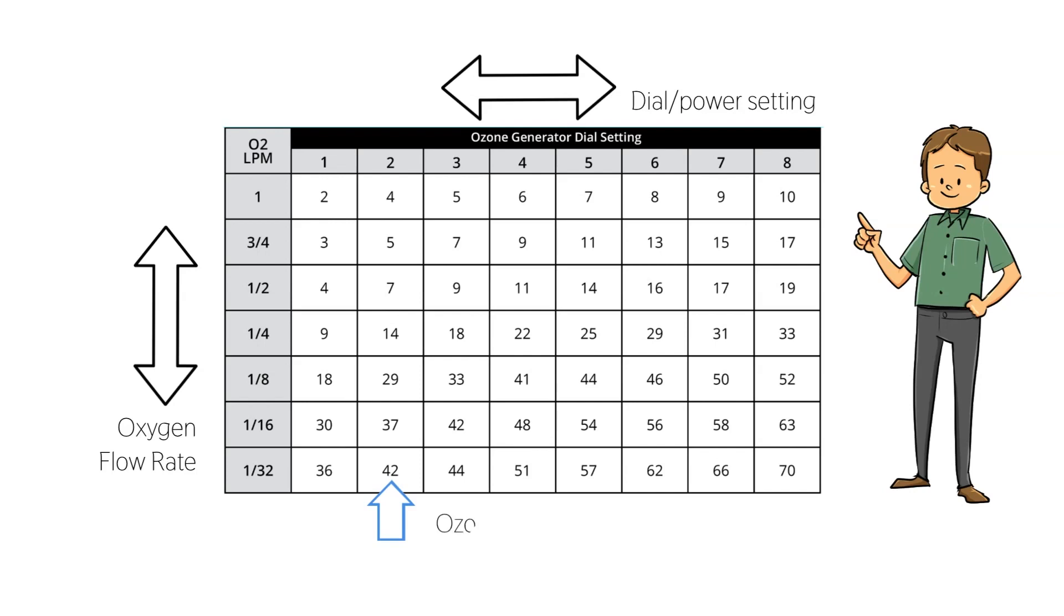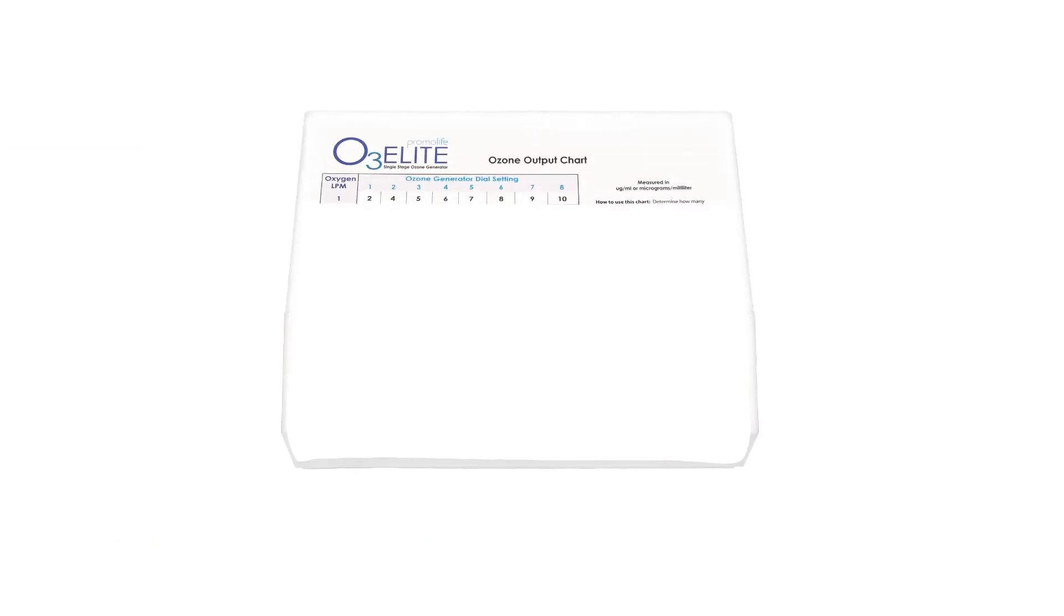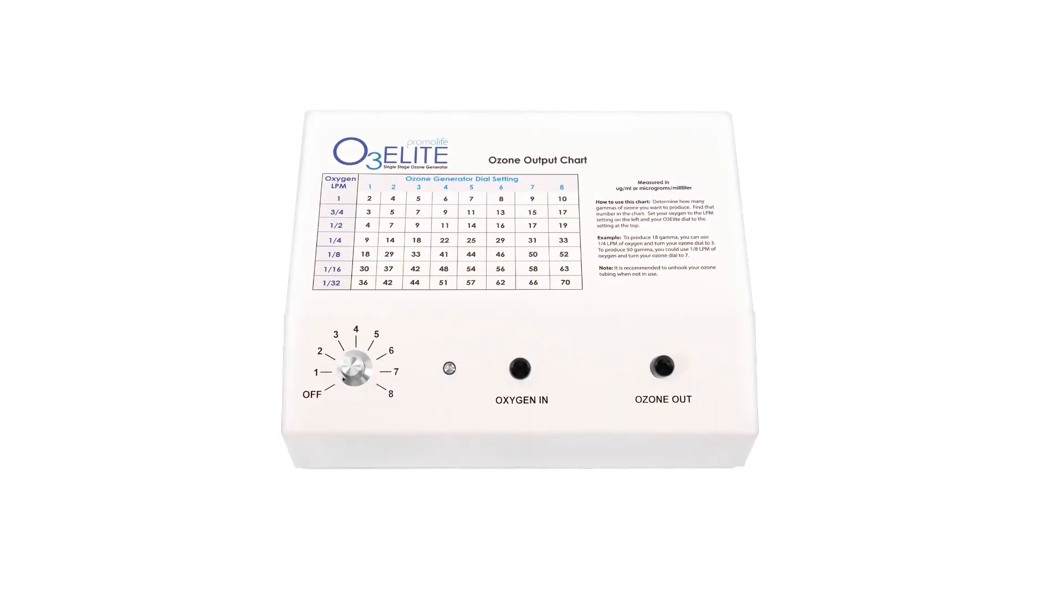The numbers within the chart are the concentration output, commonly referred to as gamma. For the purposes of this demonstration we'll use the O3 Elite single gamma chart. We'll cover how to read the chart for the O3 Elite dual and O3 arc in a minute.